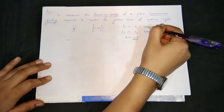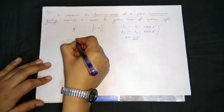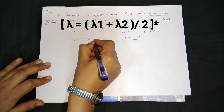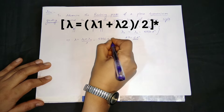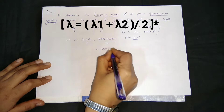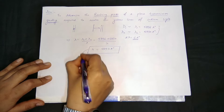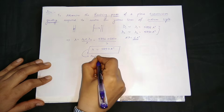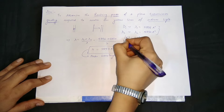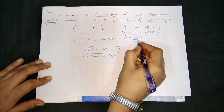I have two lines, lambda 1 and lambda 2. If I need to find the mean wavelength, lambda will be lambda 1 plus lambda 2 divided by 2, which is 5896 plus 5890 divided by 2, which is 5893 angstrom. This is the mean wavelength of sodium light. The difference between the two wavelengths of the D1 and D2 lines is D-lambda, which is 6 angstrom.